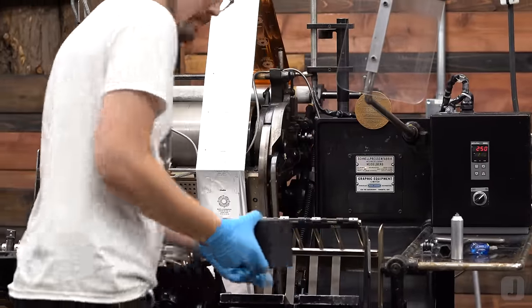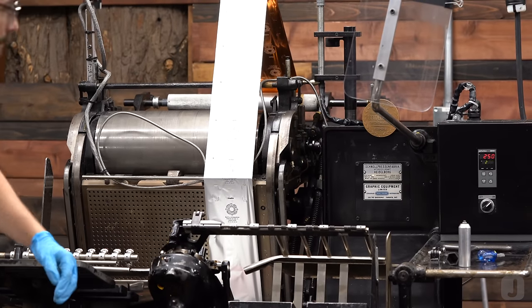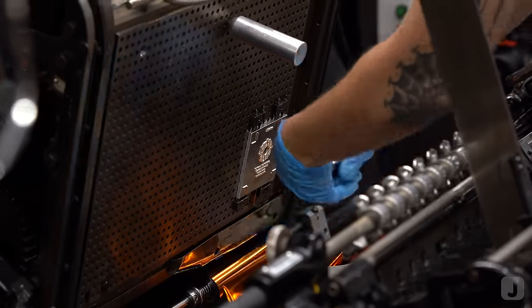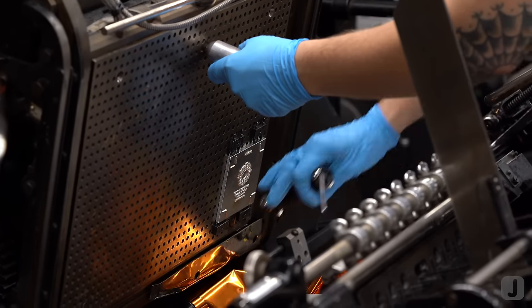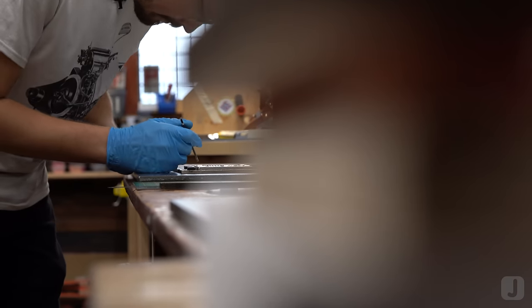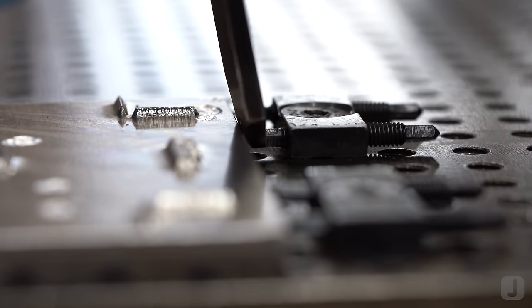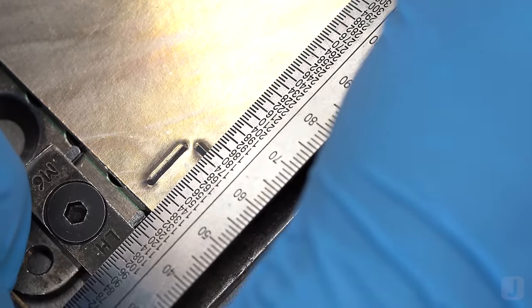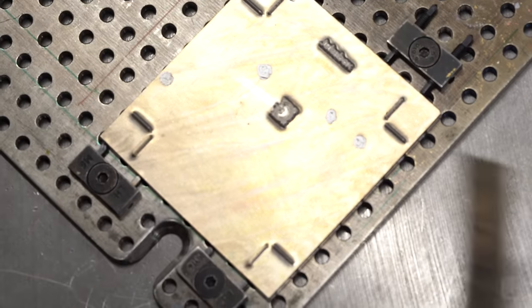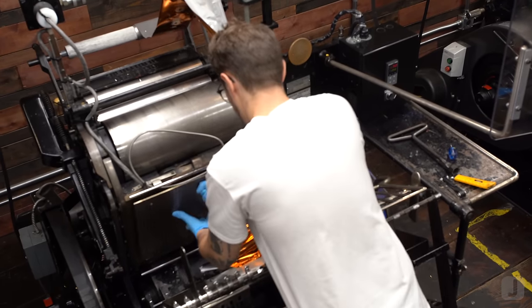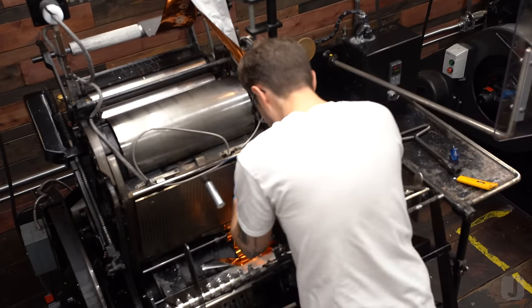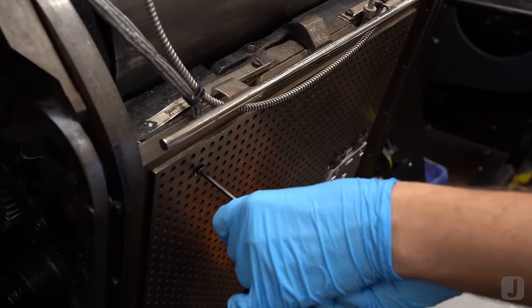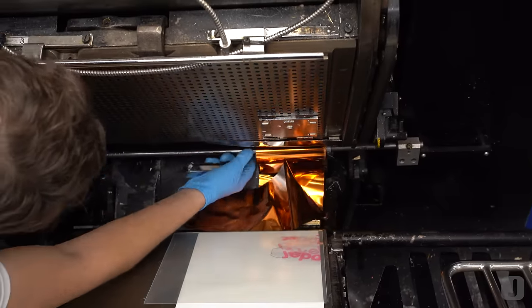With the second color finished up, I can now switch to the last hot stamping die and print the final color for this business card. I'll repeat the steps for the die setup in the same way as the previous dies. A die with a small amount of foil coverage like this needs less make ready than solid areas or patterns of foil with a lot of coverage. I'll also switch out the copper roll of foil and replace it with a silver roll.